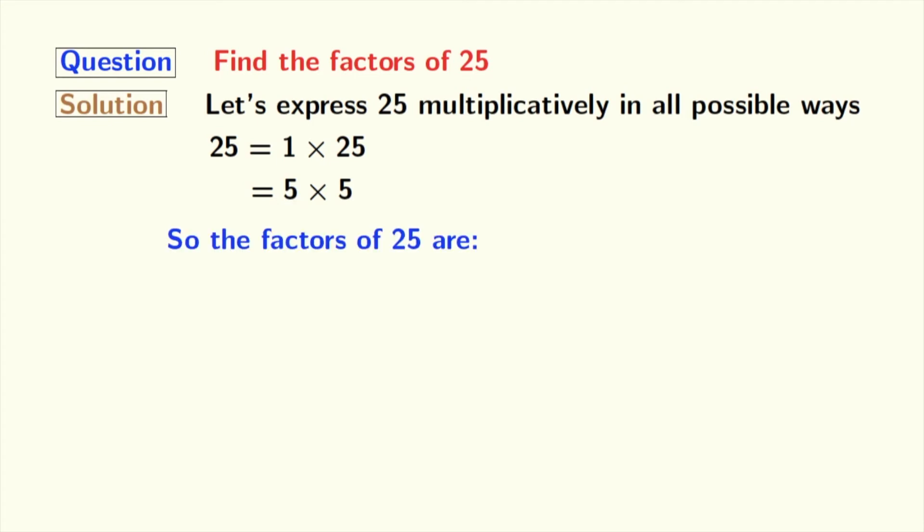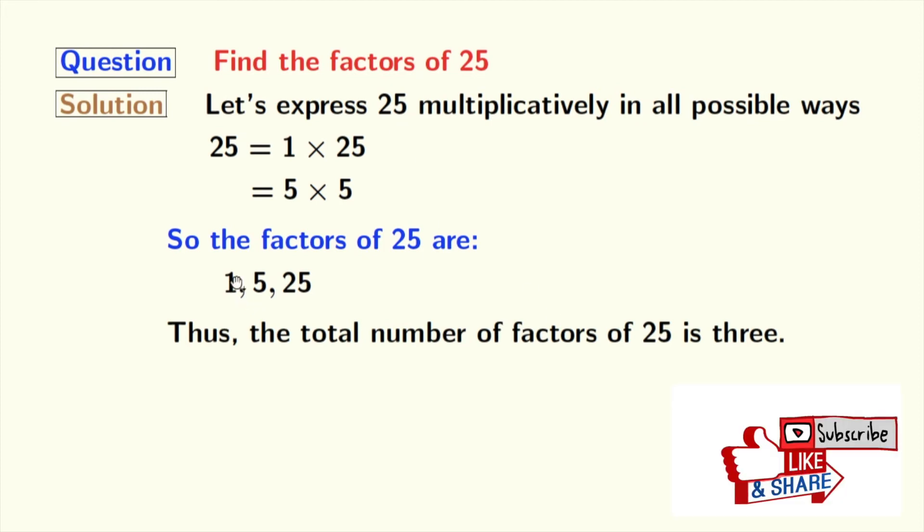Now, here are the factors of 25 which are 1, 5 and 25. So, the total number of factors of 25 is 3.